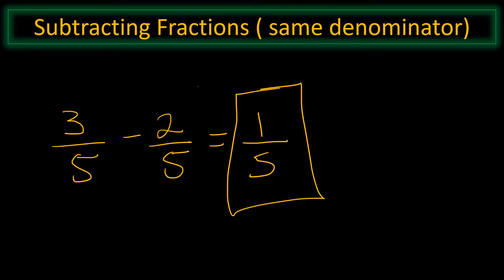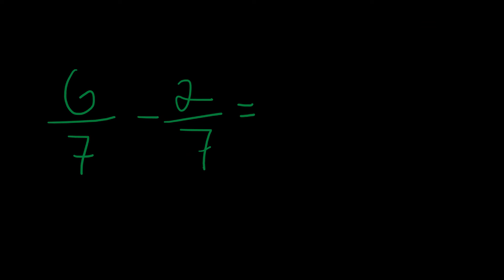Let's do another problem. In this problem, we have 6 over 7 minus 2 over 7, and we want to know what it equals. Notice there is a common denominator of 7, which means my answer will have a common denominator of 7. So 6 minus 2 is 5, and the answer would be 5 over 7.